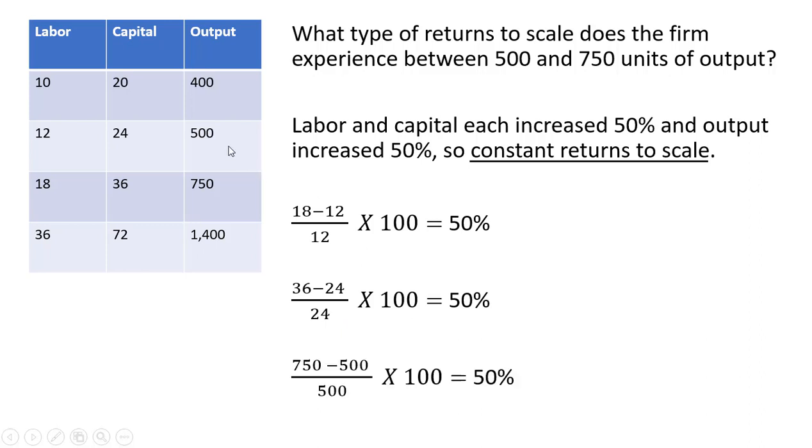And in terms of output, going from 500 to 750 units of output, that is a 50% increase. So we have constant returns to scale.